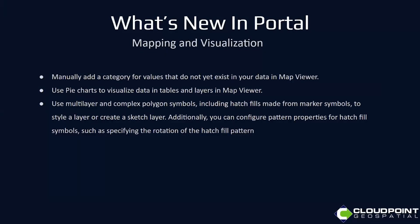In mapping and visualization: you can now manually add a category for values that don't yet exist in your data — that's always been an issue when a new value gets added and it's not being displayed. You can use pie charts to visualize data in tables and layers in the map viewer. You can use multi-layer and complex polygon symbols including hatch fills made for marker symbols to style a layer or create a sketch layer, and configure pattern properties for the hatch fill symbols such as specifying the rotation of the hatch fill pattern.